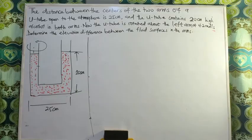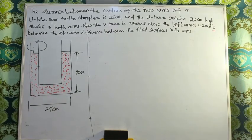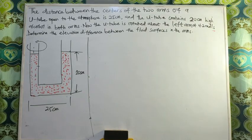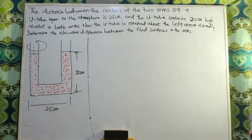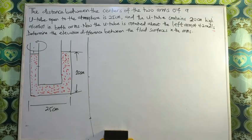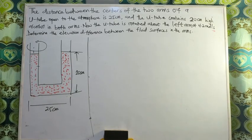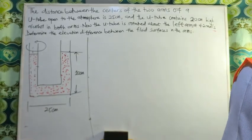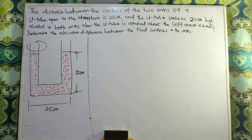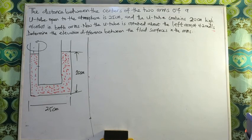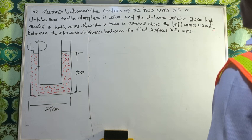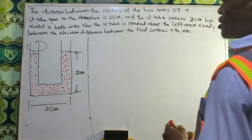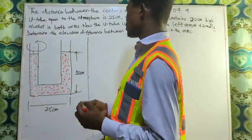The distance between the centers of the two arms of a U-tube open to the atmosphere is 25 centimeters, and the U-tube contains 20 centimeters high alcohol in both arms. Now the U-tube is rotated about the left arm at 4.2 radians per second. Determine the elevation difference between the fluid surfaces in the two arms.